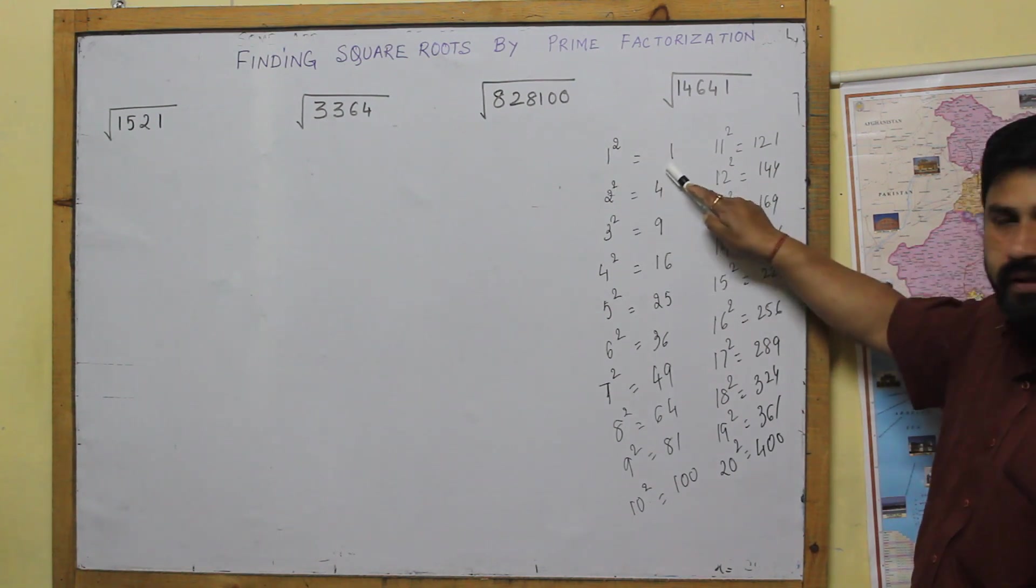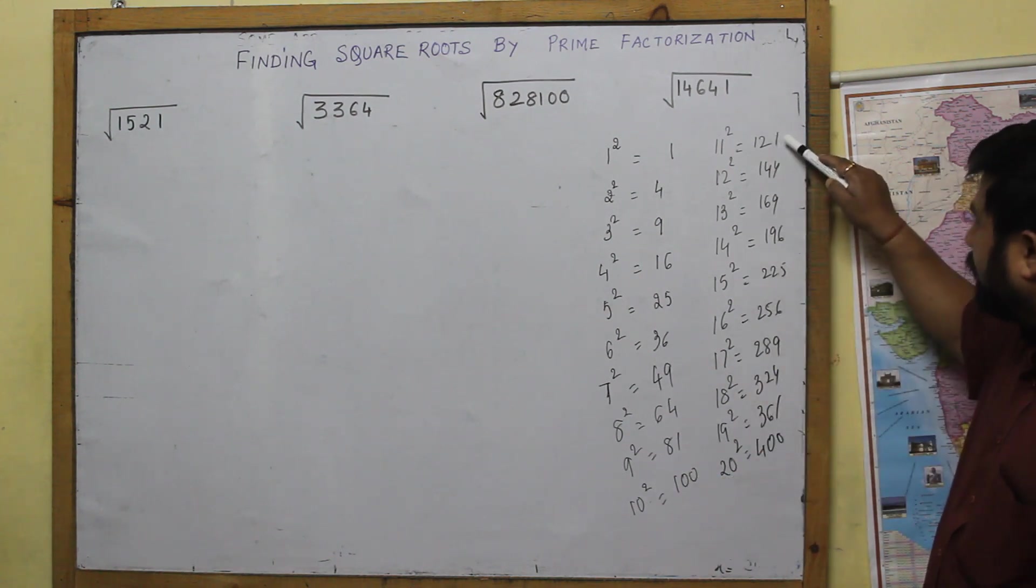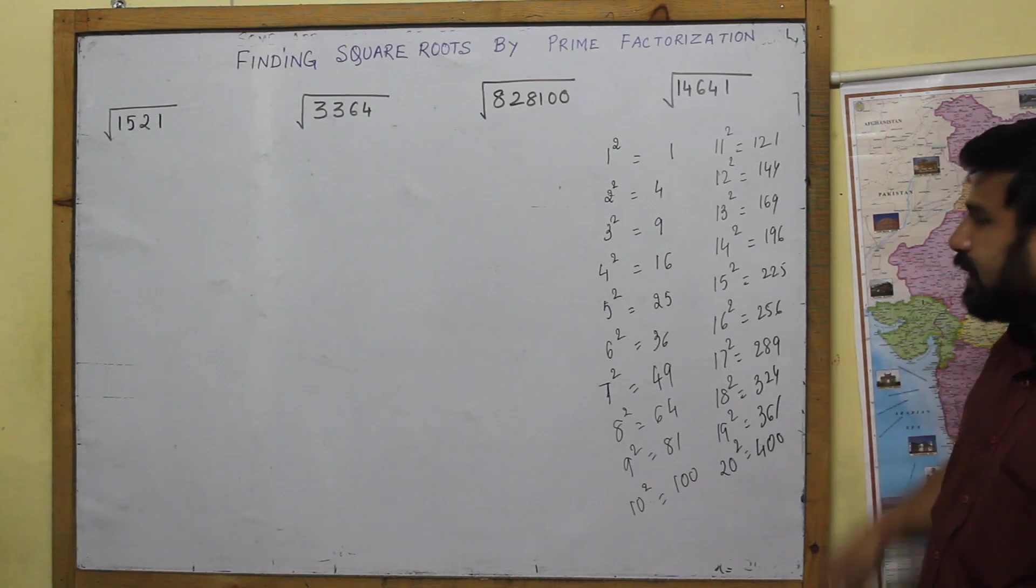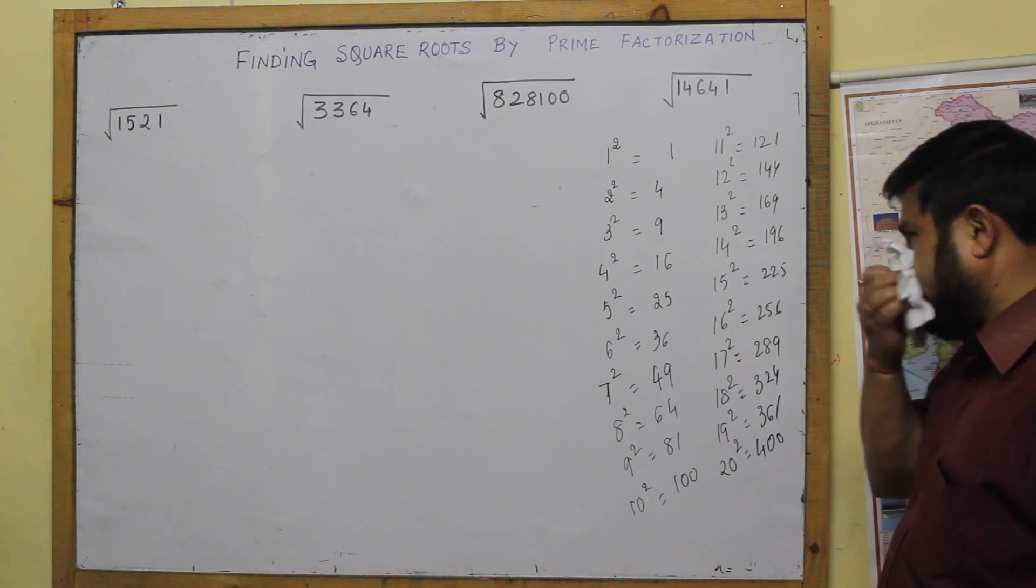You should remember one square is one, two square is four, three square is nine, up to ten square is one hundred, up to twenty square. You can remember one to twenty square, believe me, any kind of prime factorization number becomes very simple.